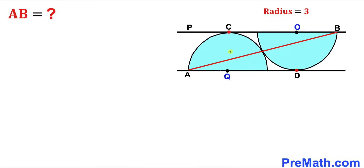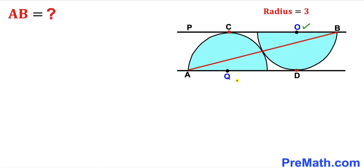Welcome to pre-math. In this video we have got these two blue semicircles put together in between two parallel lines, such that these two semicircles are tangent to each other. This red line connects points A and B. Furthermore, both of these semicircles are identical with radius three units, along with their centers O and Q respectively. Our task is to find the length AB.